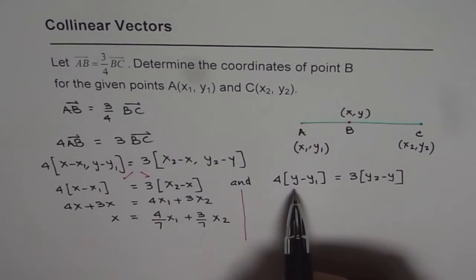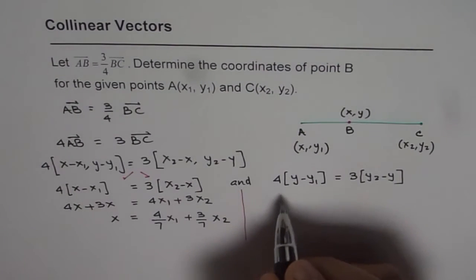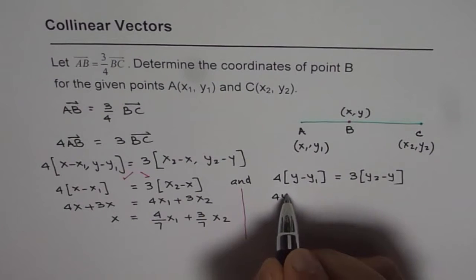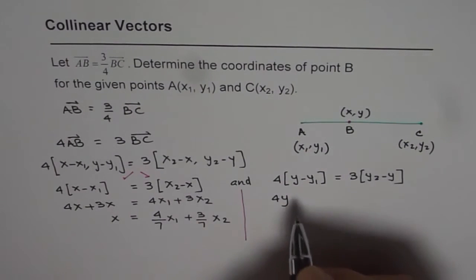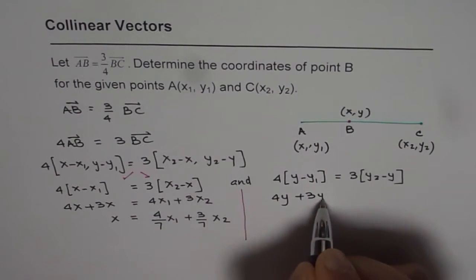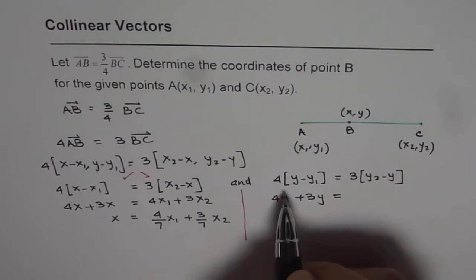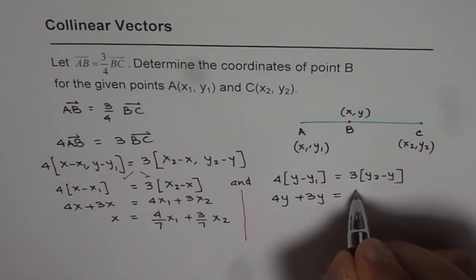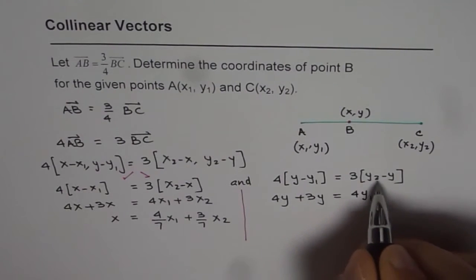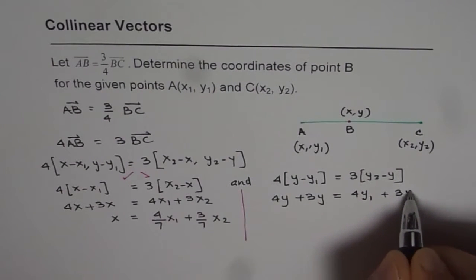Similarly we can solve for the y coordinate. We get 4y plus 3y. Taking y₁ to the right gives us 4y₁, and we already have plus 3y₂.